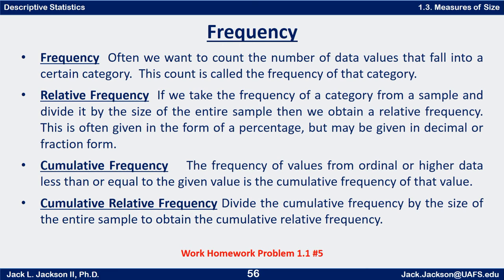Cumulative frequency applies when your data is ordinal or higher level, meaning there's an inherent order to it. The cumulative frequency is the sum of all the frequencies up to and including that point — in other words, the number of data values which are equal to or less than the given data value. The cumulative relative frequency can be thought of as accumulating the relative frequencies, or equivalently dividing the cumulative frequency by the size of the entire sample.